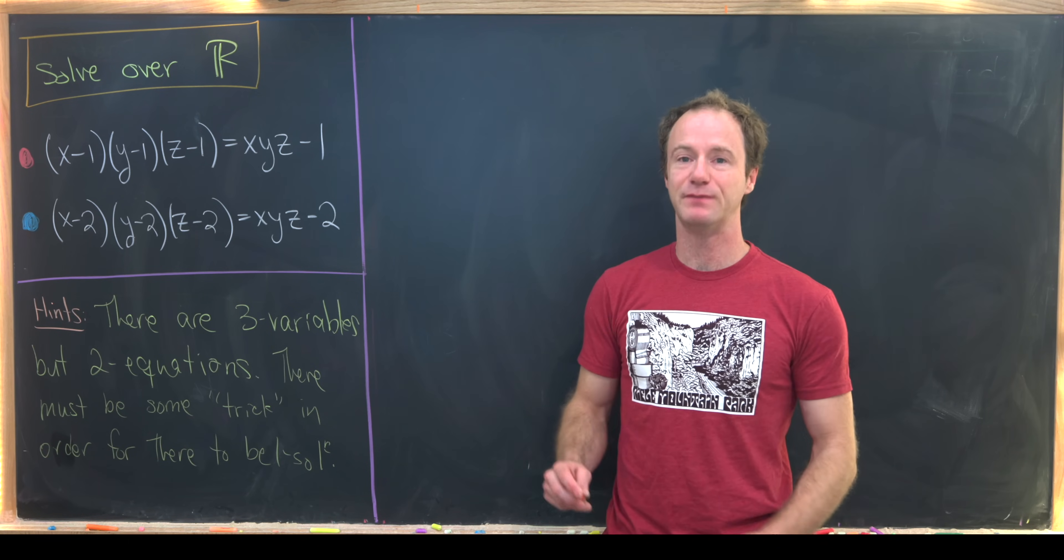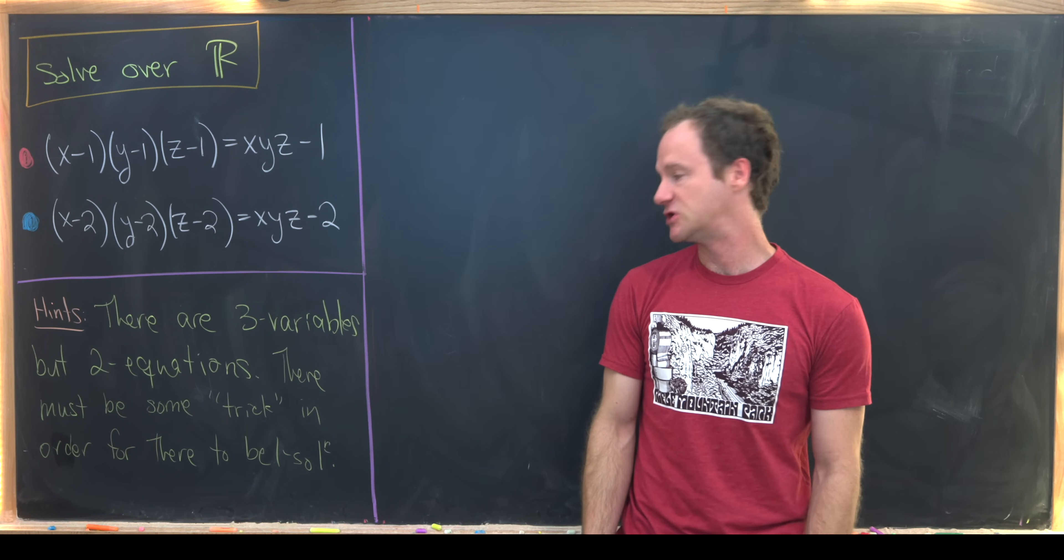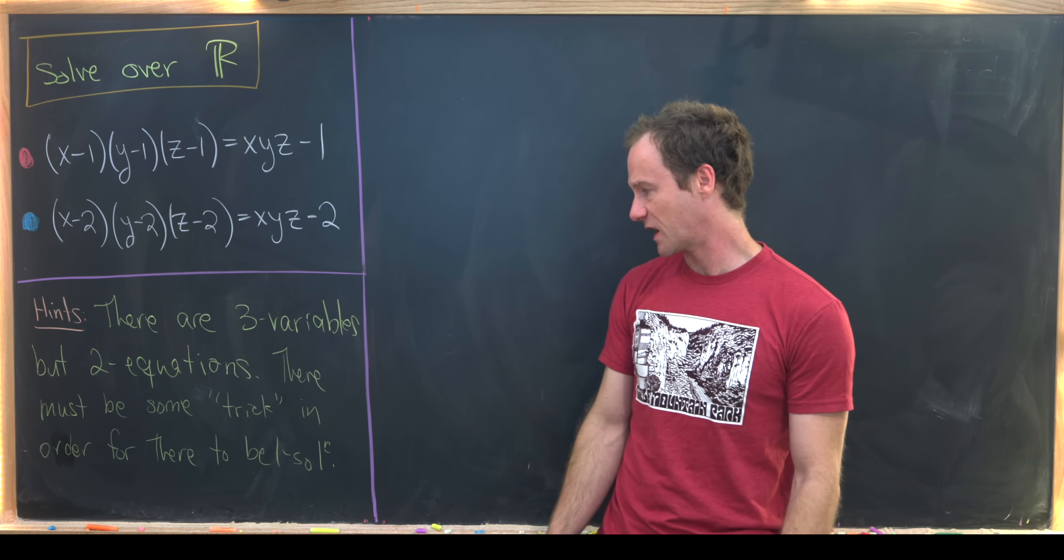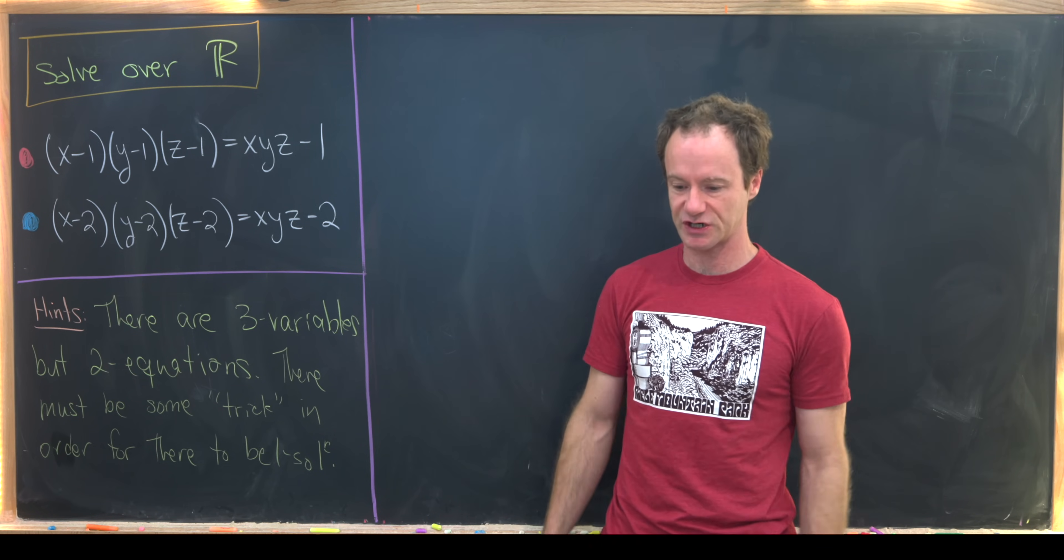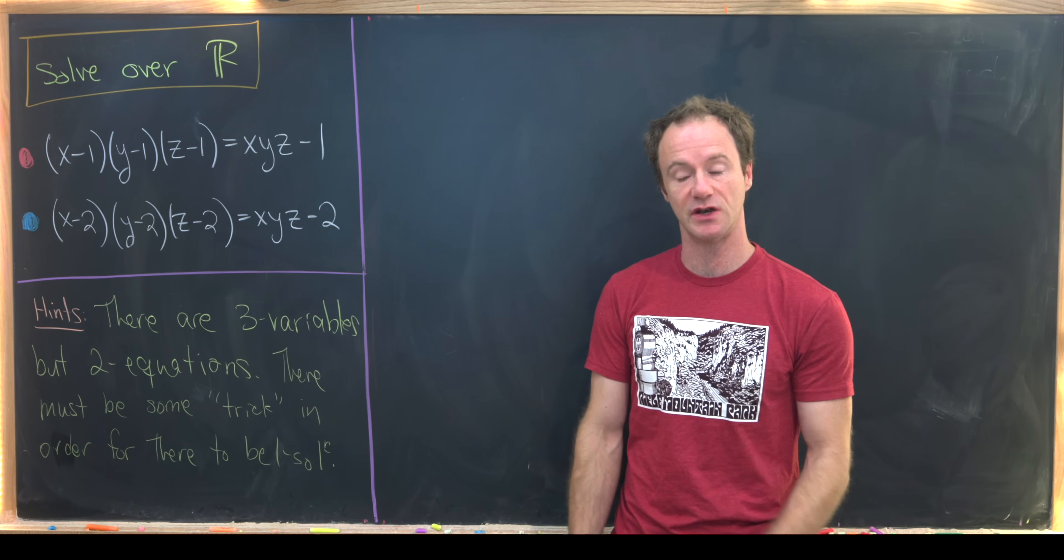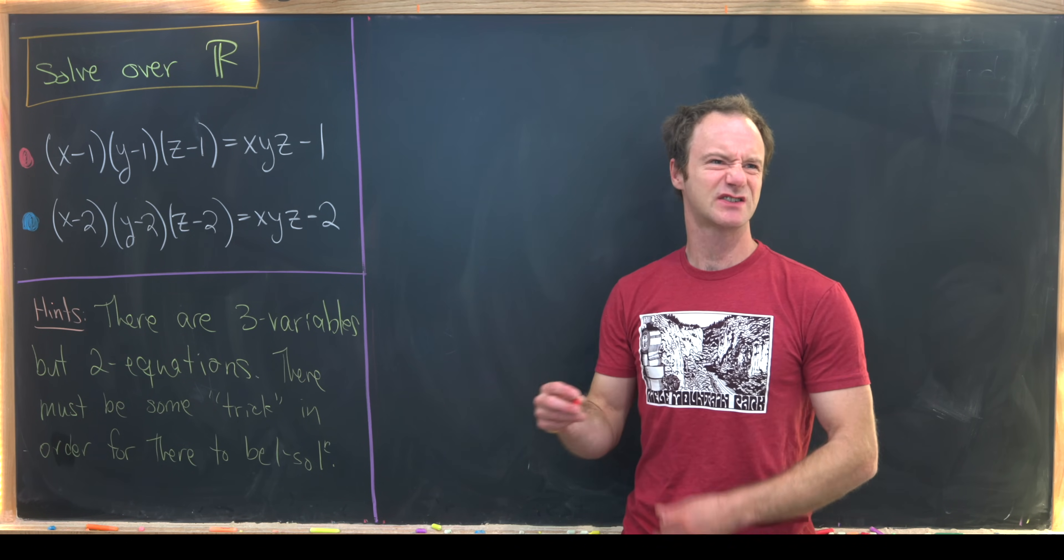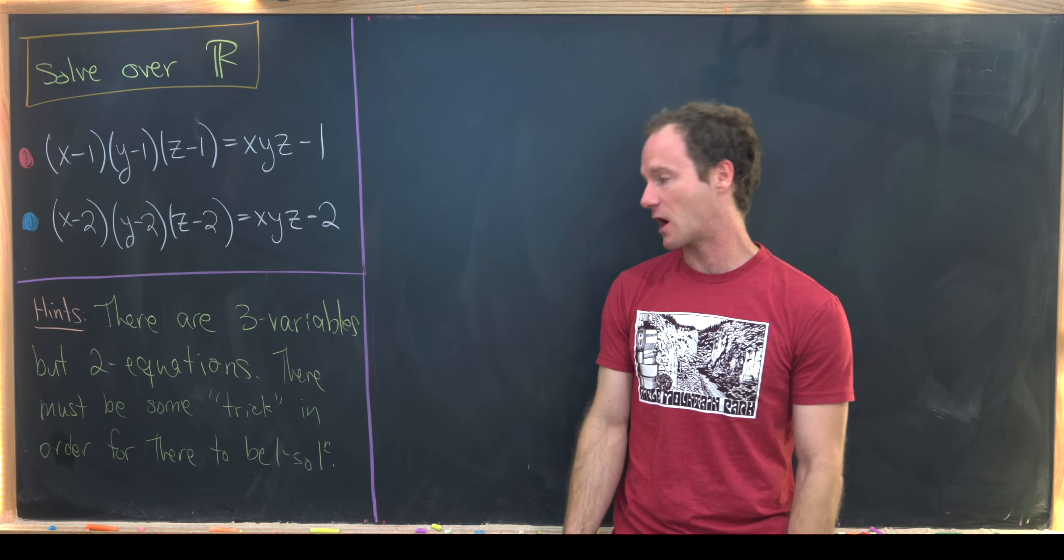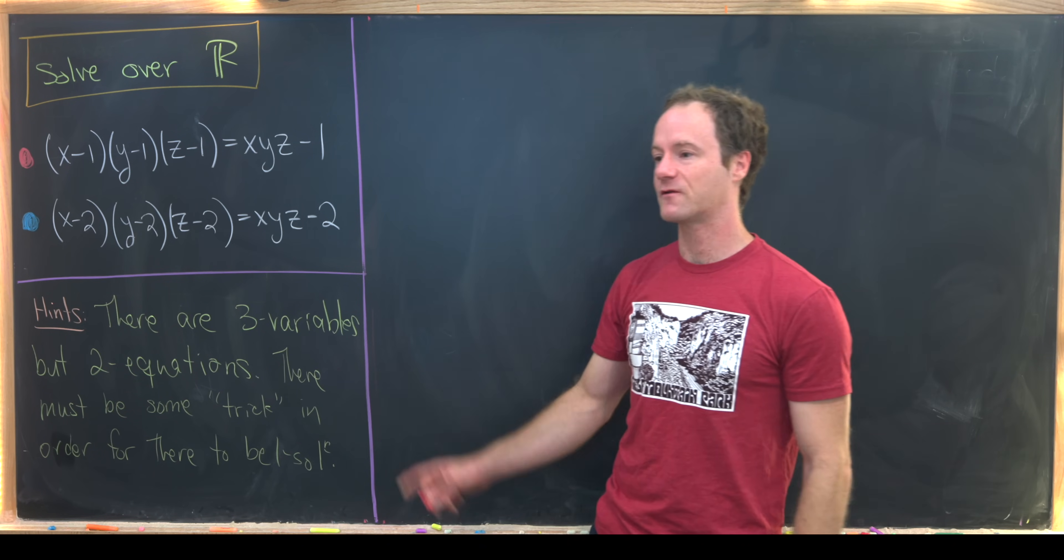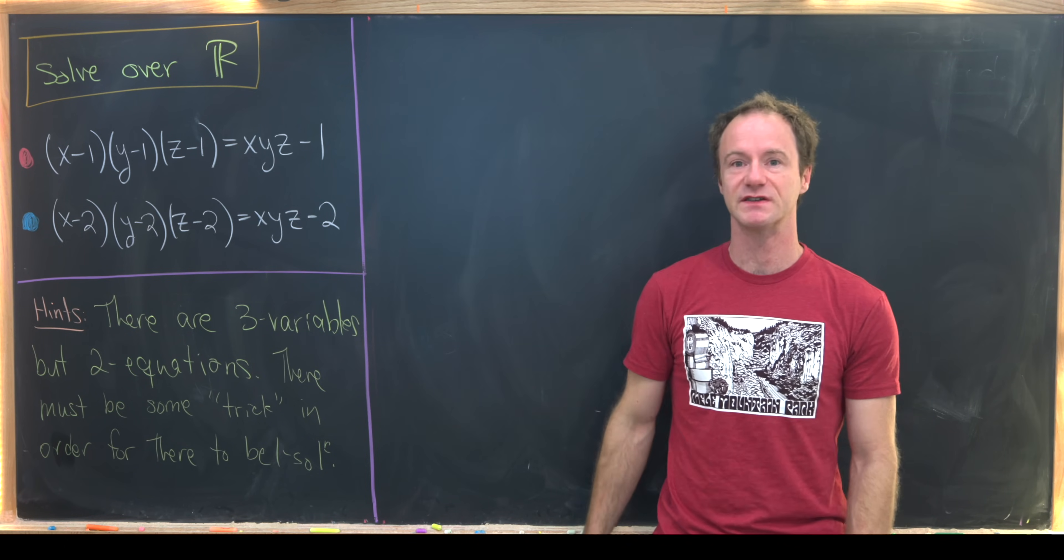There are a couple of hints built into the wording of this problem. First, notice there are three variables but only two equations, and that means there must be some sort of trick for there to be only one solution here. But a priori we don't know there is only one solution - there could be zero solutions or infinitely many solutions. We should keep our eye out for a trick that reduces this system so that there is only one obvious solution.